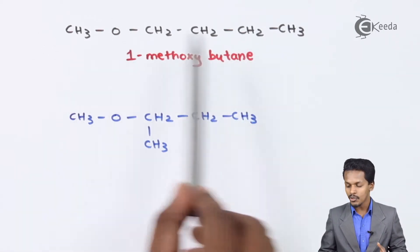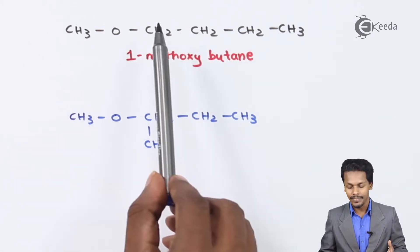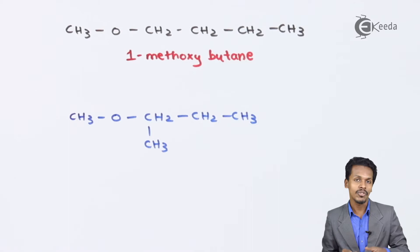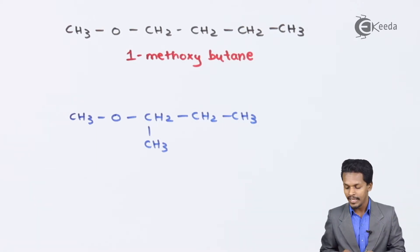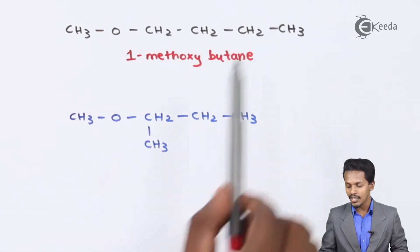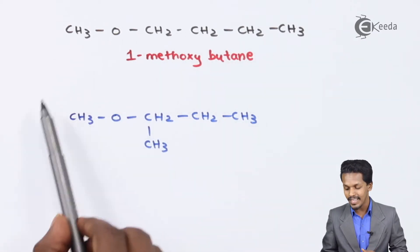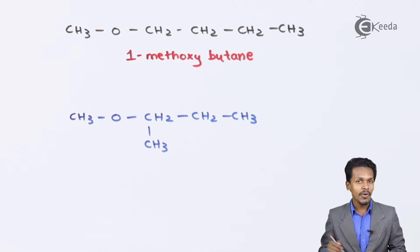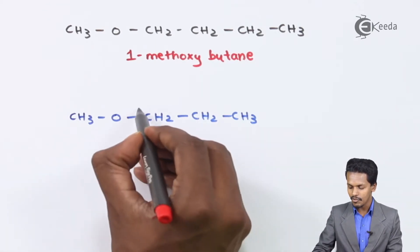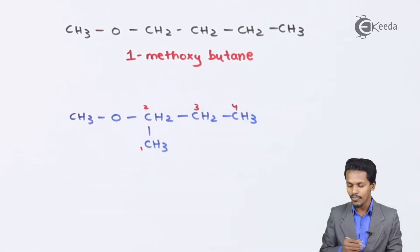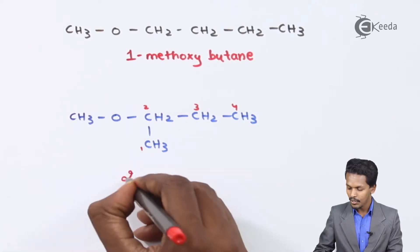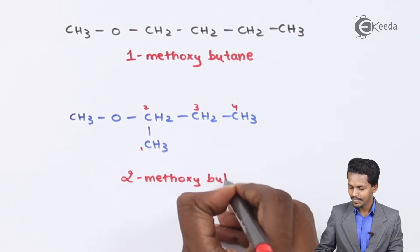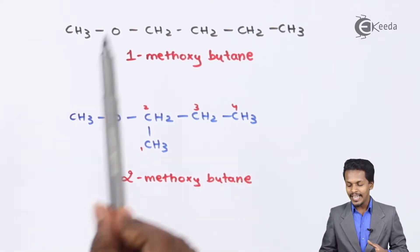If you count the total number of carbon atoms in both compounds, it is five in each case. The molecular formula is the same, but the only difference is the structural formula — specifically the arrangement of the carbon chain. In the second compound, numbering the carbons shows the methoxy group is attached to carbon number two, so it is named 2-methoxybutane.